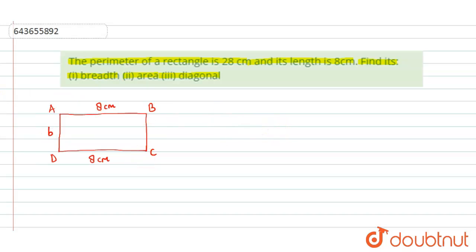The perimeter is given to us. The perimeter of a rectangle equals 2(L + B), where L is the length and B is the breadth. Now put all the values: perimeter 28 equals 2 times (8 + B).